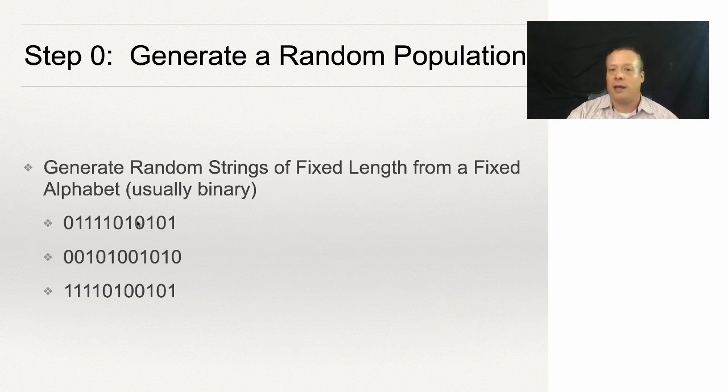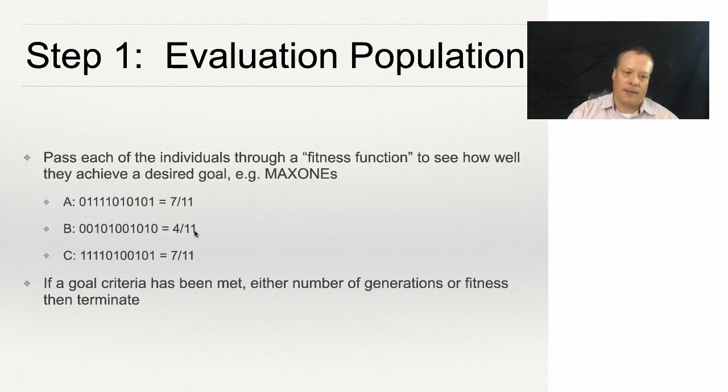Imagine for instance that we have a simple line that's a regression and we have two beta coefficients, so we just split this in half and we evolve those over time. Now let's take an even simpler problem—let's talk about the max ones problem. In the max ones problem, we're just trying to find the individual that has the maximum number of ones in its string.